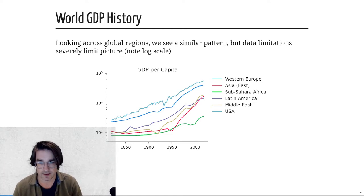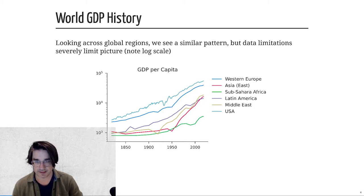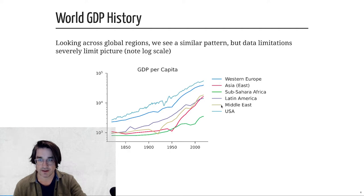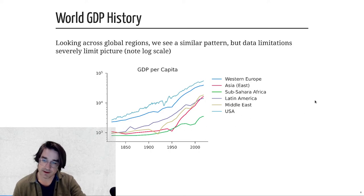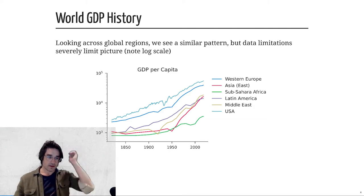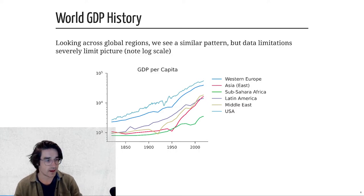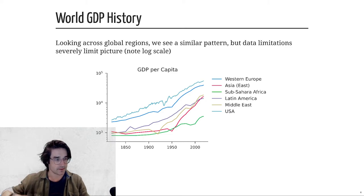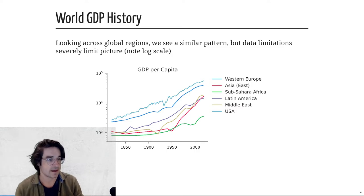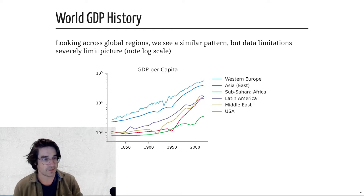Instead of just looking at individual countries, we can also look at world regions. Here I have Western Europe in dark blue, East Asia in red, Sub-Saharan Africa in green, Latin America in purple, Middle East in yellow, and the US in light blue. This graph covers since 1820 when Maddison data becomes more frequent. I'm also plotting in logs — so a constantly growing exponential process will look like a straight line, and the slope of that line tells you the growth rate.